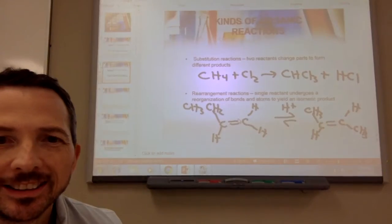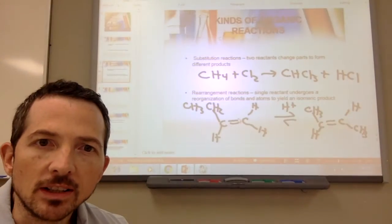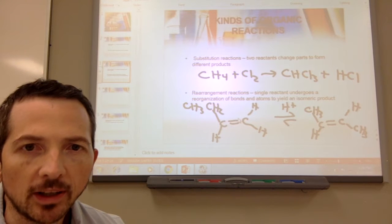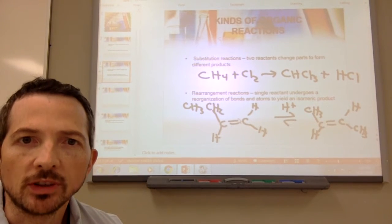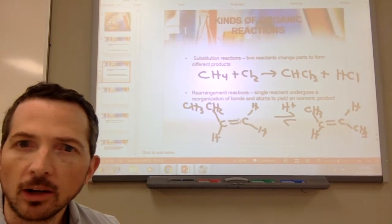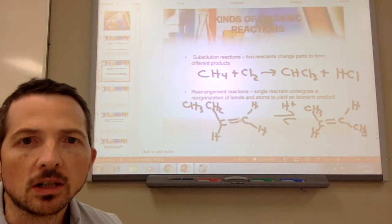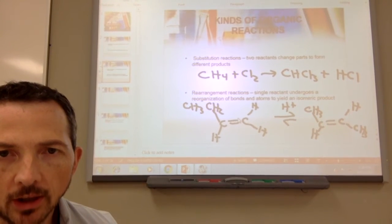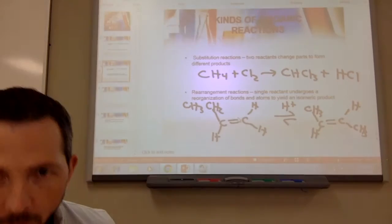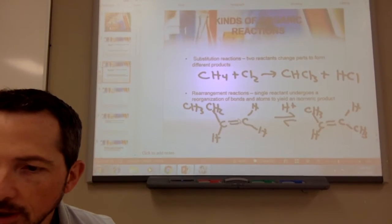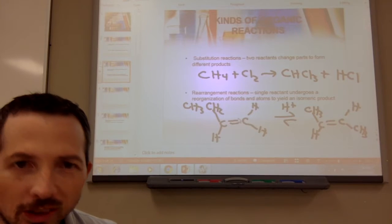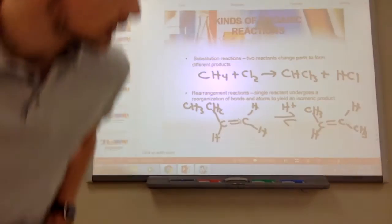An isomeric product still has the same molecular formula, but now the atoms are connected differently. When you see rearrangement reactions, you'll often see a product rearrange to form a more stable product. Let's go ahead and look at some examples from your textbook.